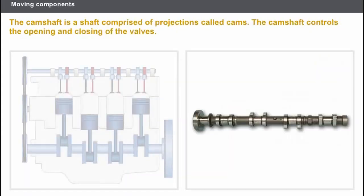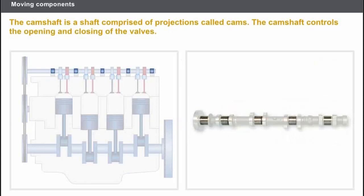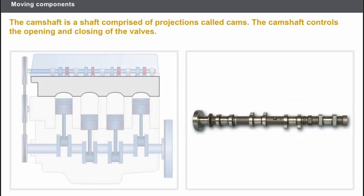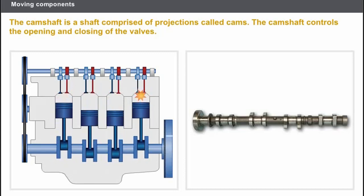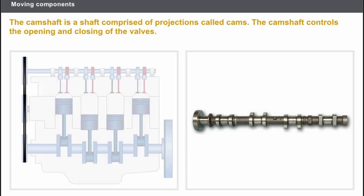The camshaft is a shaft comprising projections made of treated steel called cams, and some bearings that have been subjected to mechanical treatment to prolong their lifespan. The camshaft is usually fitted on the cylinder head, and sometimes on the rocker cover. It controls the opening and closing of the valves, and the crankshaft drives the cams in a rotary movement via the valve timing components.